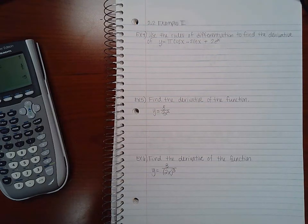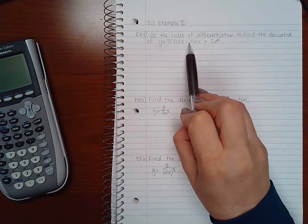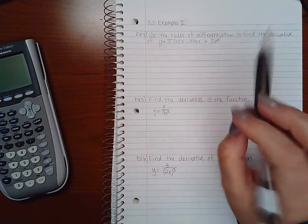In this video, we will be covering the second part of the examples from section 2.2. This problem says: use the rules of differentiation to find the derivative of y = π cos x - sin x + 2e^x.